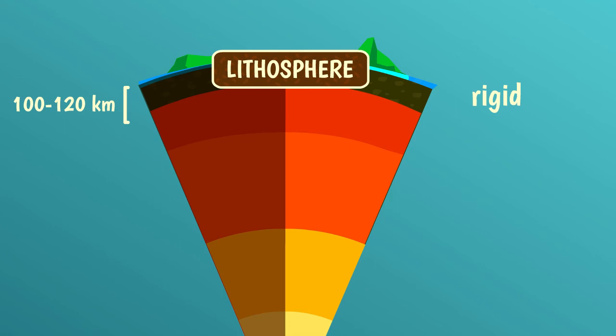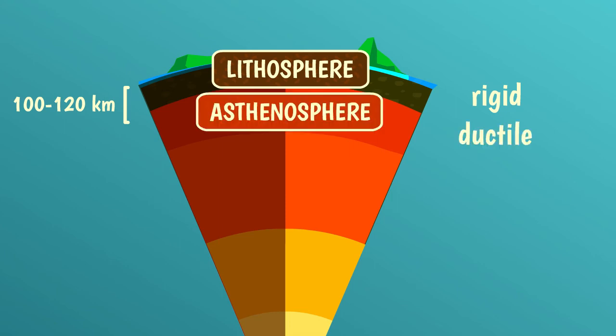As we go deeper, the temperature continues to rise, and at a depth around 100 or 120 km it reaches approximately 1200 degrees Celsius, which corresponds to the temperature at which rocks start to become more ductile. We then have a second layer called the asthenosphere. Unlike the lithosphere, in the asthenosphere, even though rocks remain solid, they are able to move in response to density, pressure, or temperature gradients. Thus, in the asthenosphere, rocks are moving around in loops in a process called mantle convection.